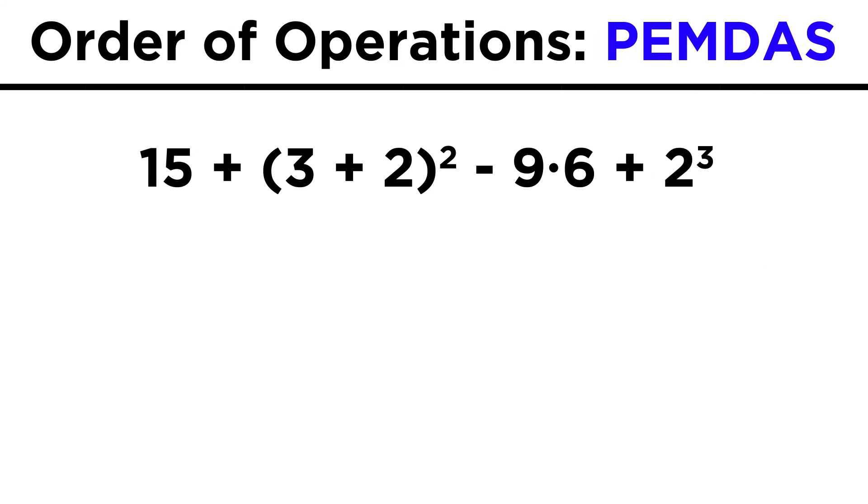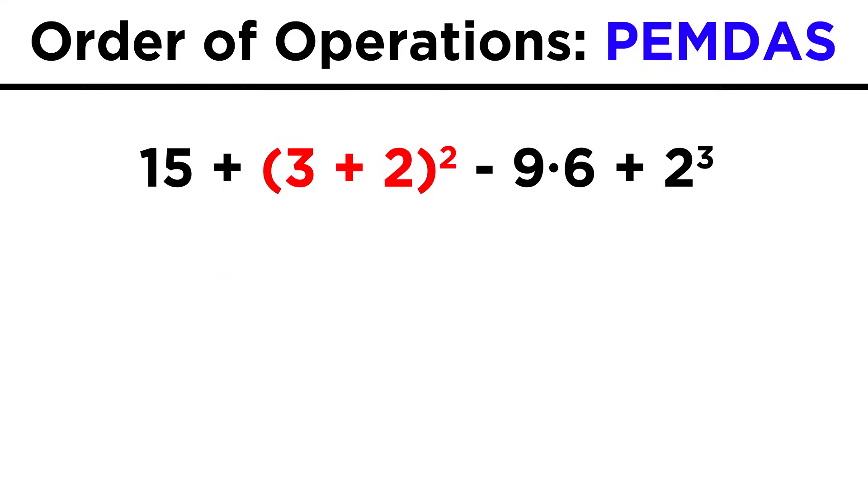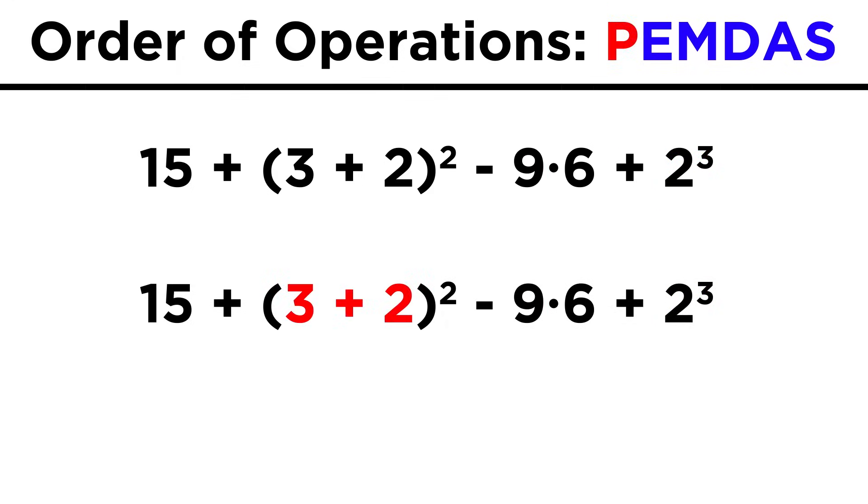Now let's try a trickier one. Fifteen plus three plus two quantity squared. Notice that this is how we refer to this parenthetical term verbally. It implies that three plus two lies within parentheses. Continuing with the expression, we have minus nine times six plus two cubed. So let's go through the order of operations. First we do the parenthetical term, three plus two is five.